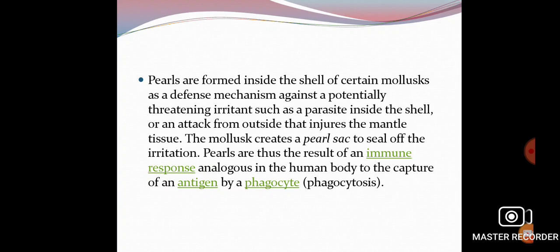The mollusc creates a pearl sac to seal off the irritant. The oyster mollusc forms the pearl sac around the parasite, sand particles, or shell particles. This response is analogous in the human body to the capture of an antigen by the phagocyte, or phagocytosis.